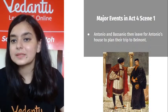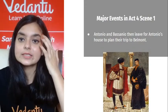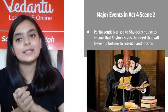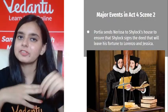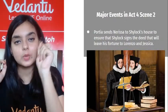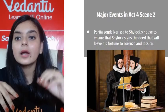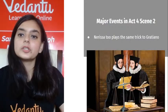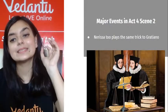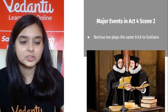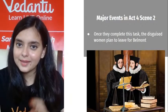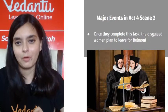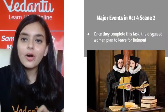Antonio urges Basanio to let the lawyer have the ring. Basanio gives in and sends Gratiano to run after Portia and present her with the ring. Antonio and Basanio then leave to plan the trip to Belmont. Portia sends Nerissa to Shylock's house to ensure the deed is signed. Nerissa plays the same trick on Gratiano. Once they complete this task, the disguised women plan to leave for Belmont.